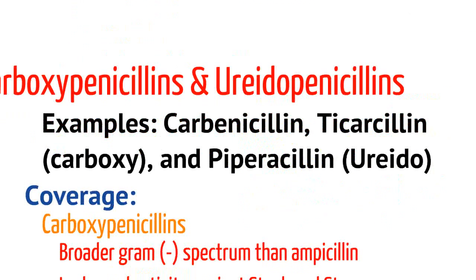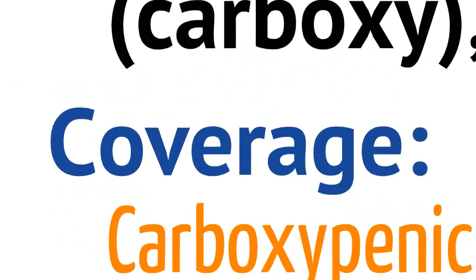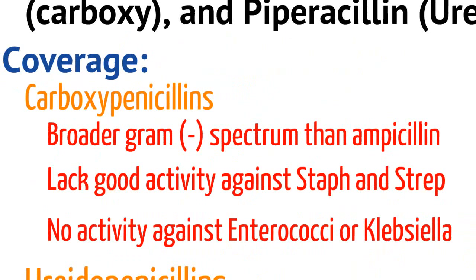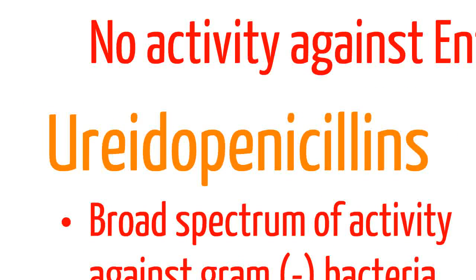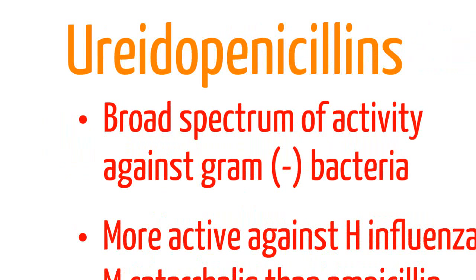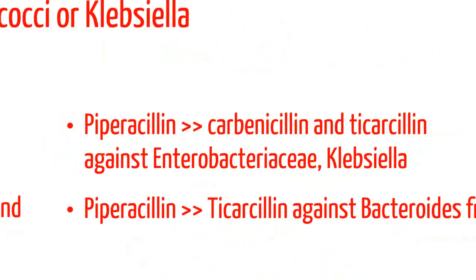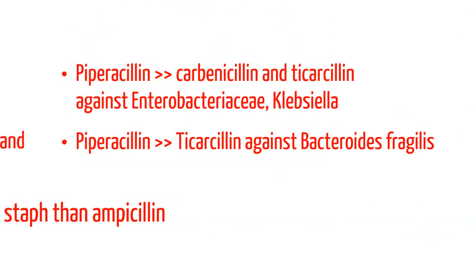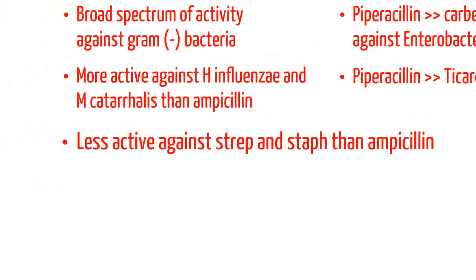Now let's move to carboxypenicillins and ureidopenicillins. Examples include carbenicillin and ticarcillin, which are carboxypenicillins, and piperacillin, which is a ureidopenicillin. Carboxypenicillins have a broader gram-negative spectrum than ampicillin, but no good activity against staph or strep, and no activity against enterococcus or Klebsiella. Ureidopenicillins have a broad spectrum against gram-negative bacteria. Piperacillin has greater activity than carbenicillin and ticarcillin against Enterobacteriaceae and Klebsiella, and works better than ticarcillin against Bacteroides fragilis. Ureidopenicillins have less activity against staph and strep than ampicillin.